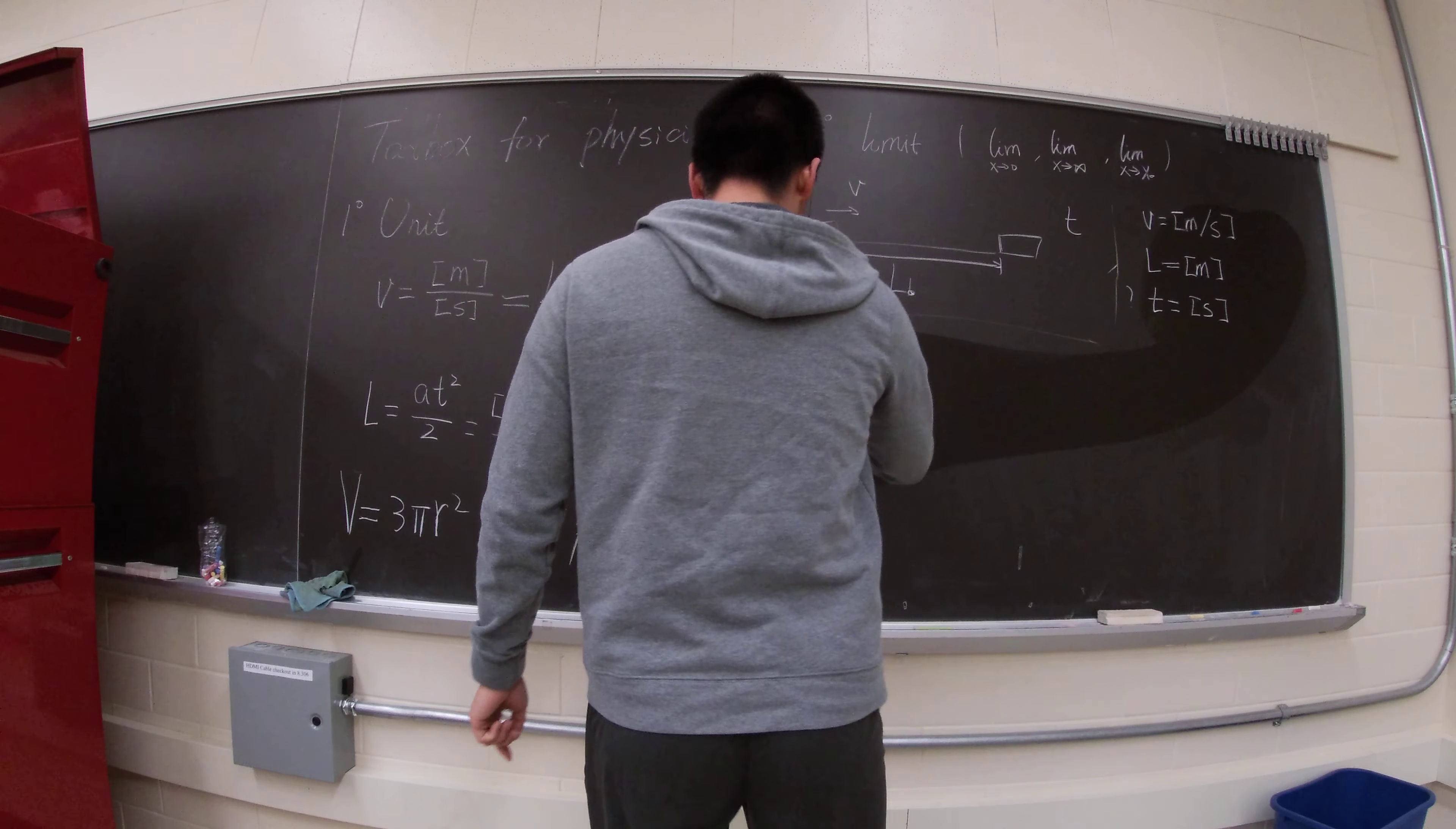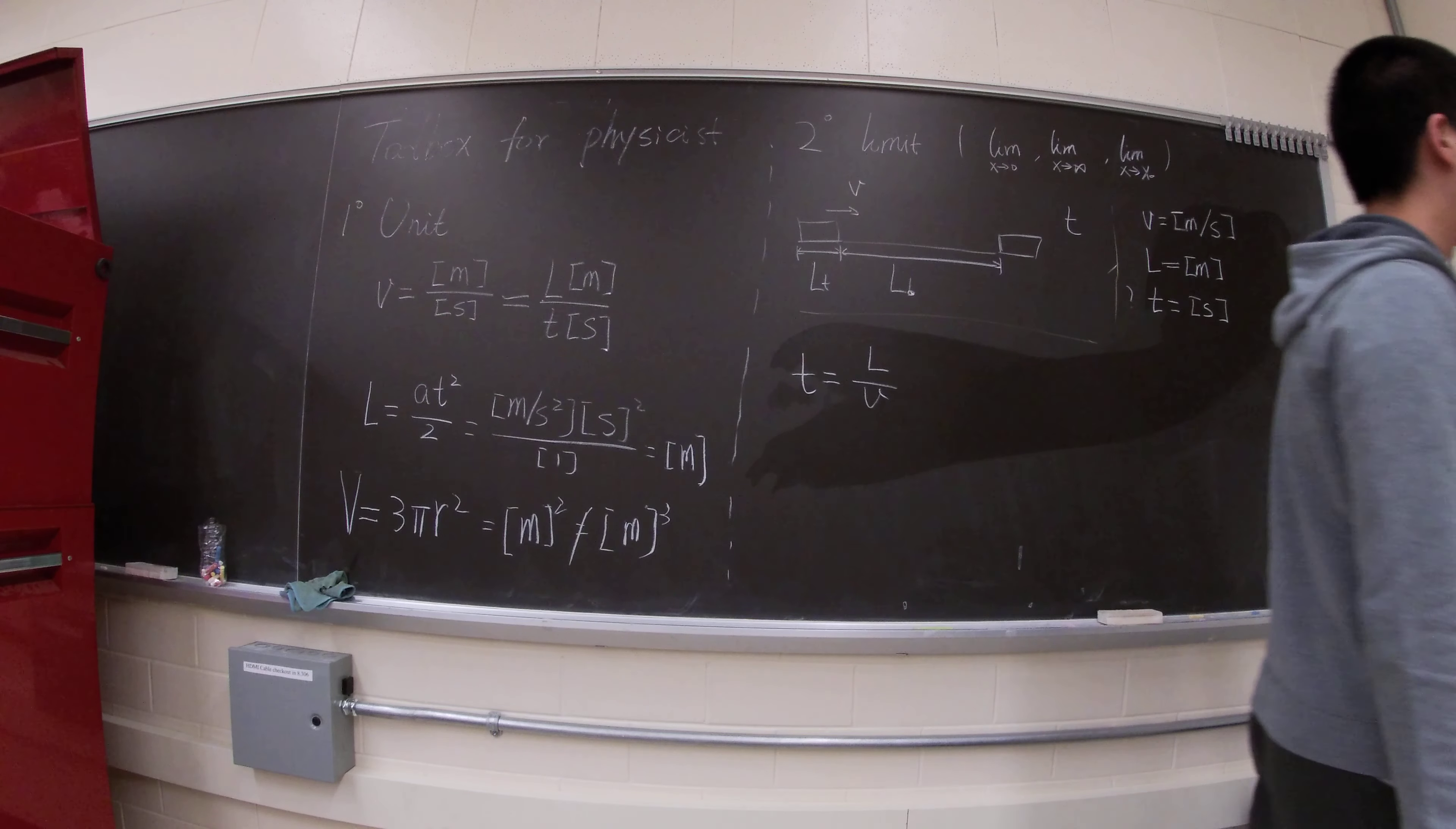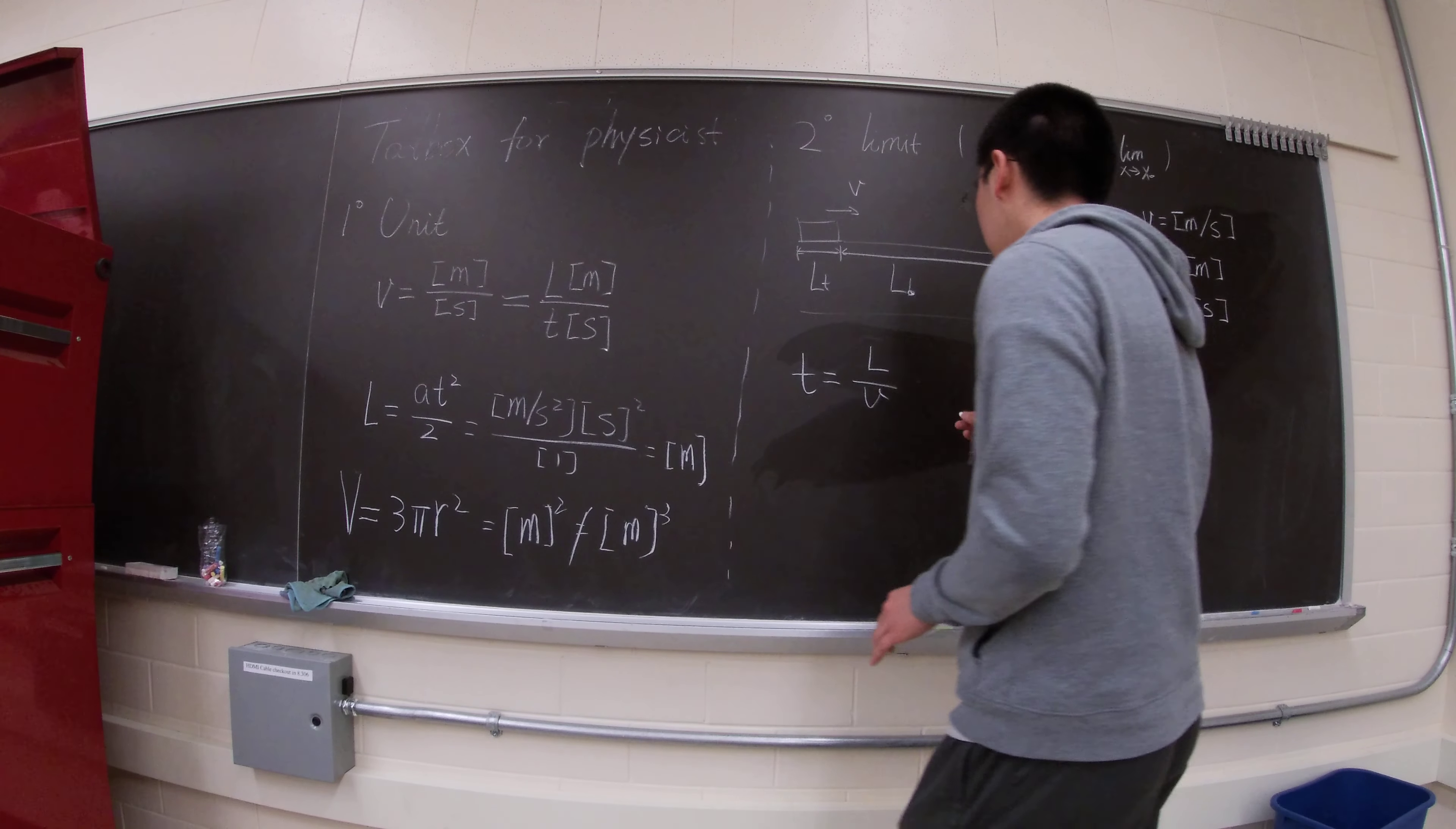Obviously we can get this, right? Something L over v. Because L has a unit of m. You want to cancel the m and left with the s. So that's it. That's how to do it. For a really simple case, obviously. If the case is really complicated, we won't use it to do that.